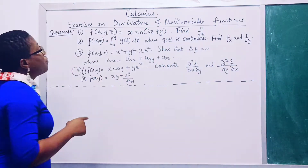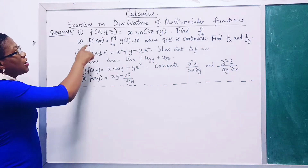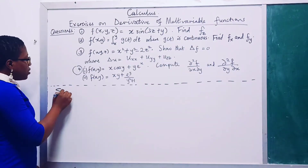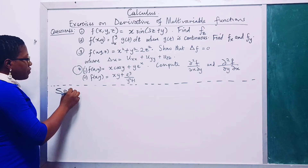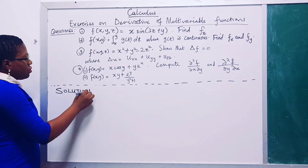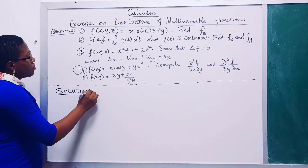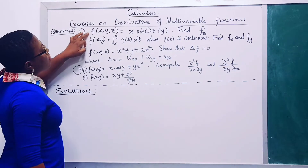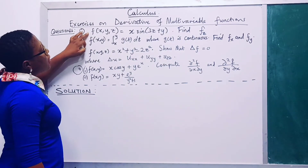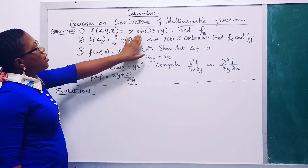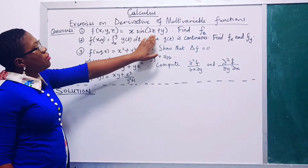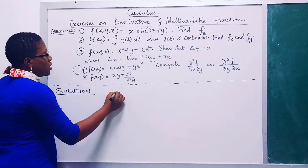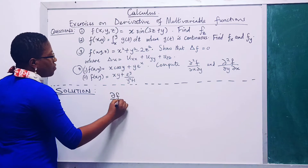The first question gives us a function and says we should differentiate it with respect to z. So let's start number one. f(x, y, z) equals x·sin(3z + y).